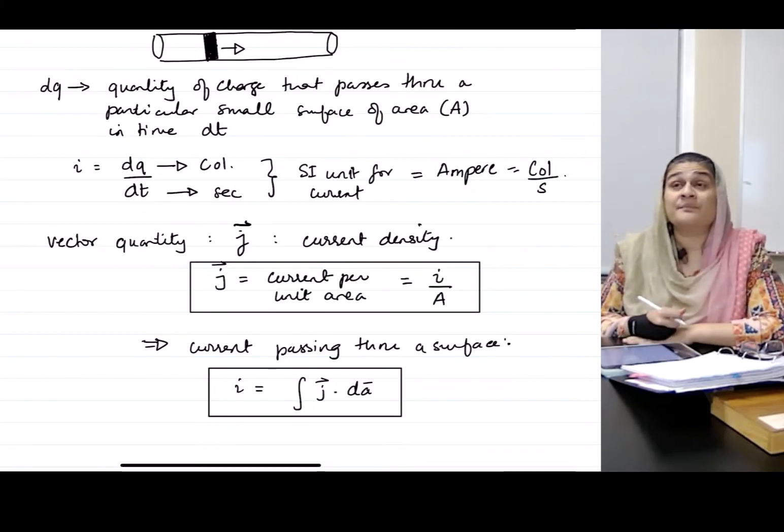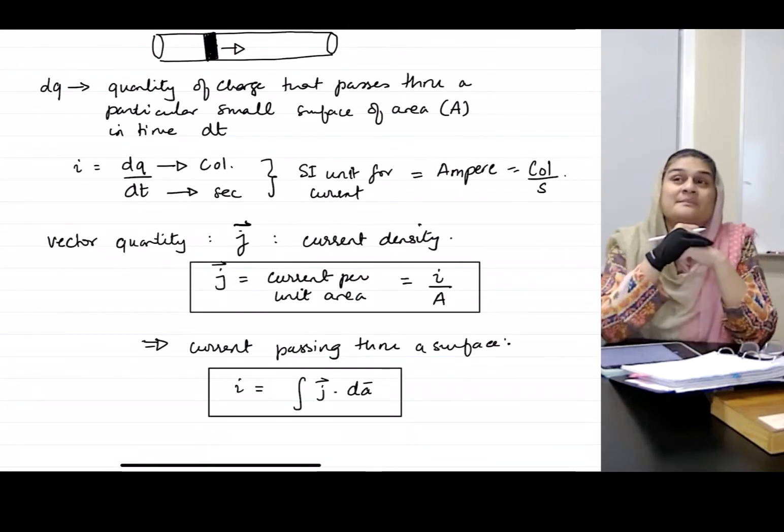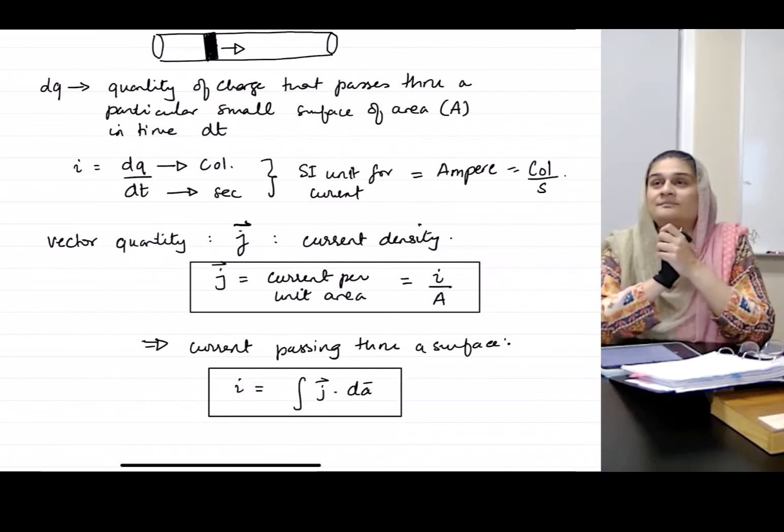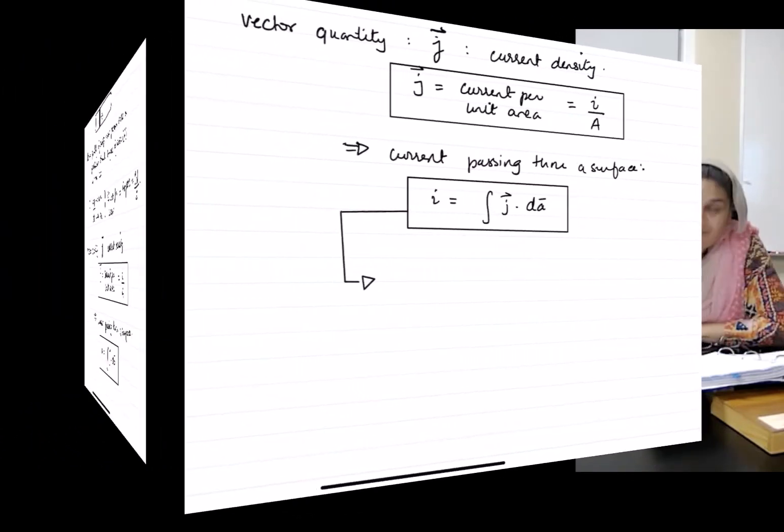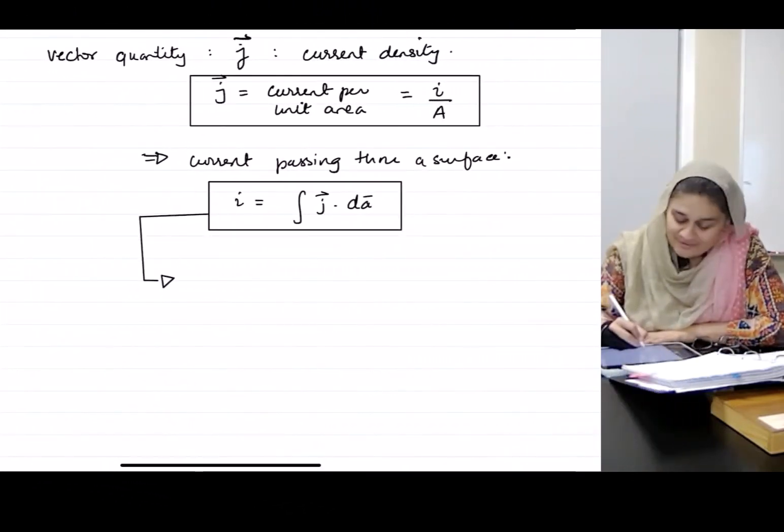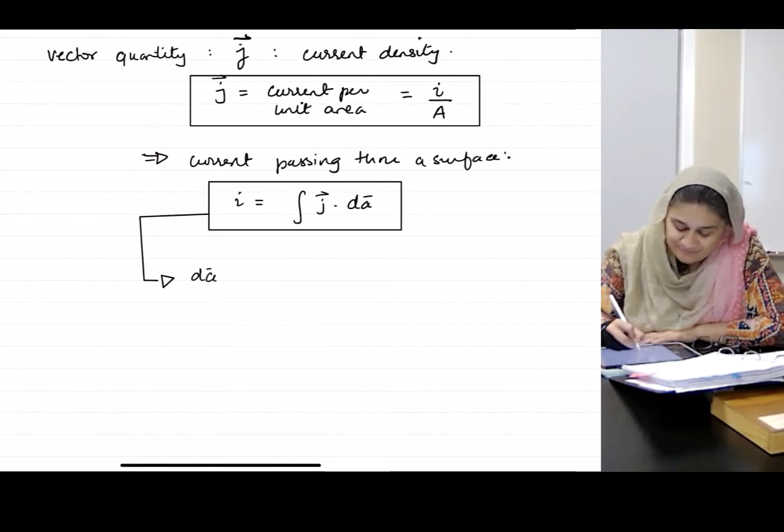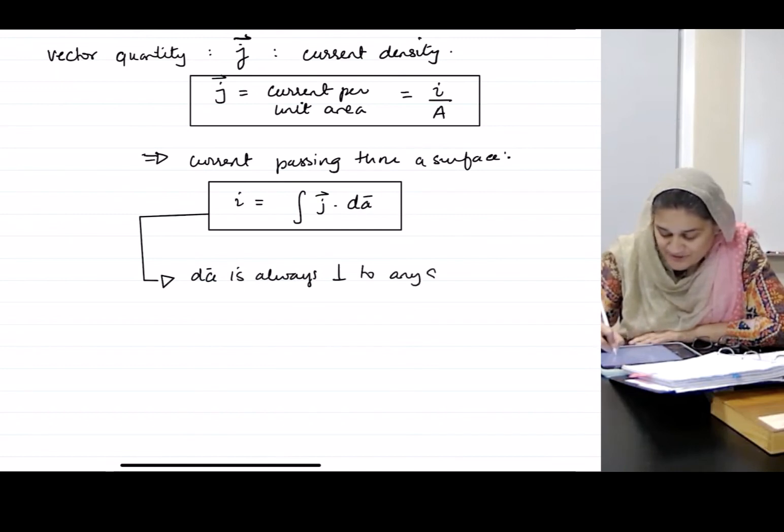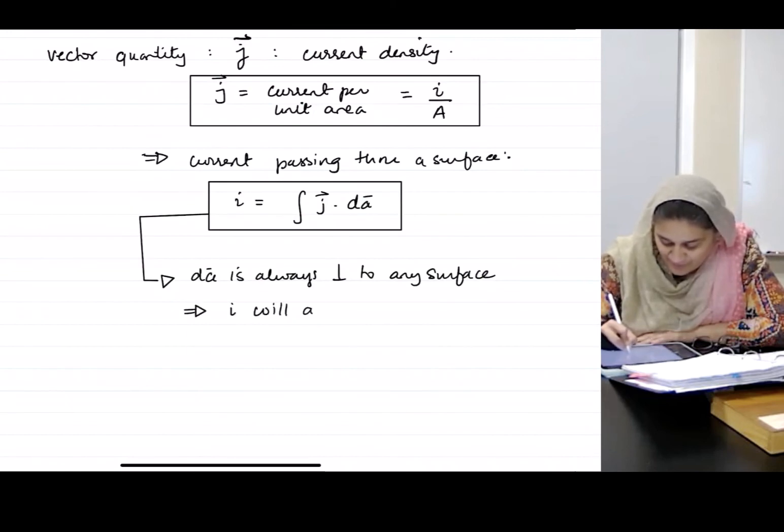It's a dot product, which basically means I will be a scalar. Vector dot vector gives me a scalar. Note, dA is always perpendicular to any surface, which implies I will always be positive.